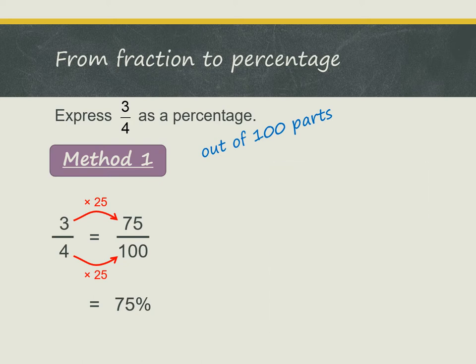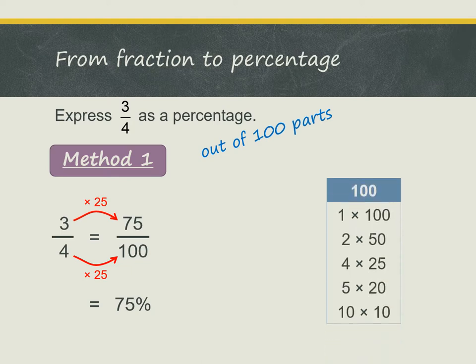To use this method well, you need to know the factors of 100 very well. Here are the factors of 100: 100 is 1 times 100, 2 times 50, 4 times 25, 5 times 20, and 10 times 10. So the factors of 100 are 1, 2, 4, 5, 10, 20, 25, 50, and 100.